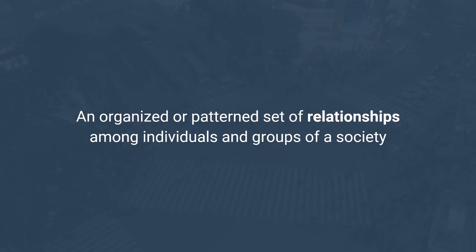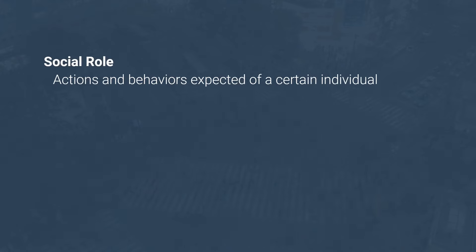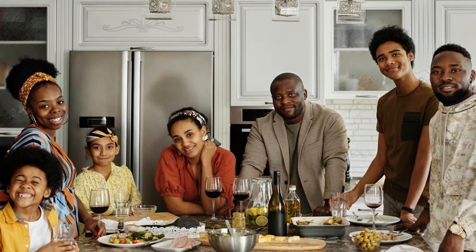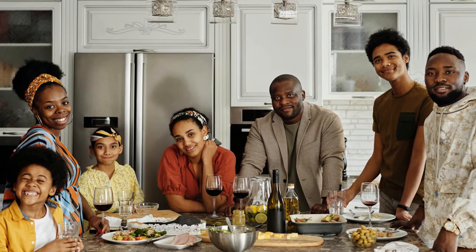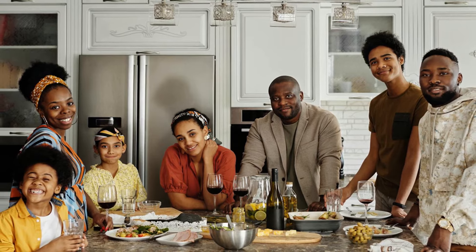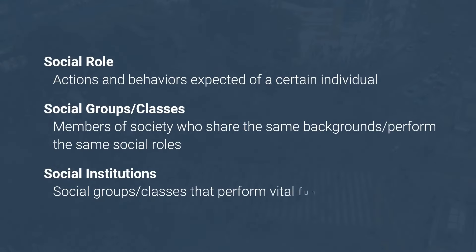A social system is an organized or patterned set of relationships among individuals and groups of a society. It is a formal organization of status and role. In it, each member is assigned a social role — actions and behaviors expected of a certain individual, like hard work expected from a father, care for children from a mother, and obedience to parents from a child. Members of society who share the same backgrounds or perform the same social roles are grouped together into social groups or classes. Social groups that perform vital functions in society, such as family, government, and religion, are called social institutions.